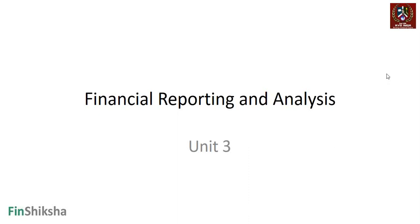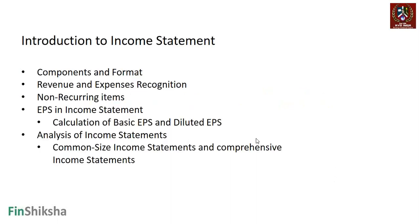We continue with our discussion of unit 3 in financial reporting and analysis, and continue with income statements. We've already seen broadly the structure of an income statement and how revenue and cost structure come into being. In this particular video, we're going to talk about revenue recognition methods — how do you recognize whether a sale has happened or not, and what is the implication of all this recognition into the statement.